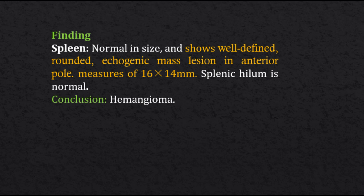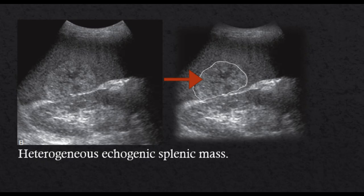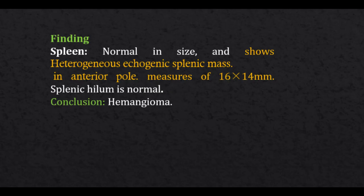Splenic hilum is normal. Conclusion: hemangioma. Second case finding: spleen normal in size and shows a heterogeneous echogenic splenic mass in the anterior pole, measuring 16 by 14 mm. Splenic hilum is normal. Conclusion: hemangioma.